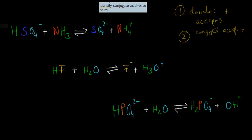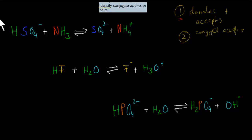So here we have first our hydrogen sulfate ions, plus ammonia, and that is a reversible reaction going into sulfate ions and ammonium ions. So the first thing we do is figure out which one is donating and which one is accepting in the forward reaction.